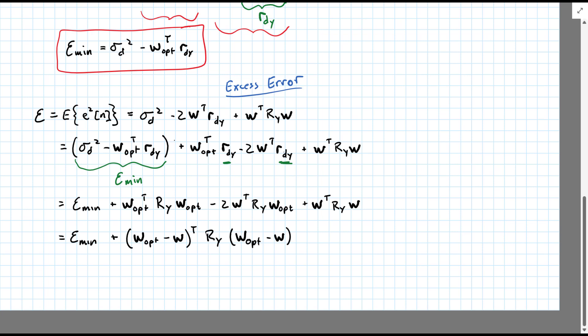So now, let's define delta W to be that difference. Because W_opt minus W, of course, is going to be the degree to which W, any particular weight, differs from our optimal.